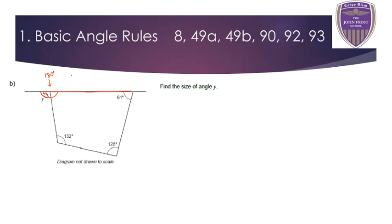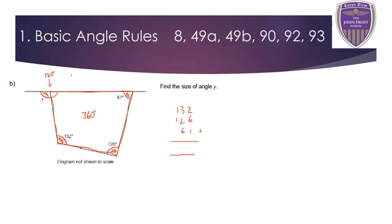If I look carefully, I've got a shape which is a quadrilateral — so I've got four sides and four angles. Angles in any quadrilateral add up to 360 degrees. I've got 132 degrees, 126 degrees, and 61 degrees. The first thing I can do is add those three together, giving me 319 degrees.